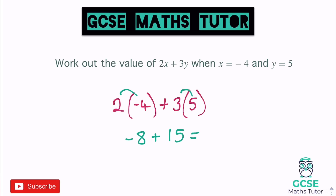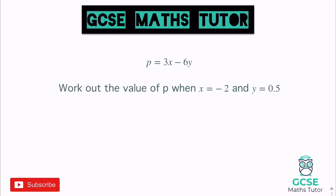So it's negative 8 add 15, which is 7 — that's our final answer. Now one more before you have a go: p = 3x − 6y. Work out the value of p when x is negative 2 and y is 0.5. It doesn't matter what values we're given — we just sub them in as normal. This is just phrased slightly differently with 'p equals' at the start.